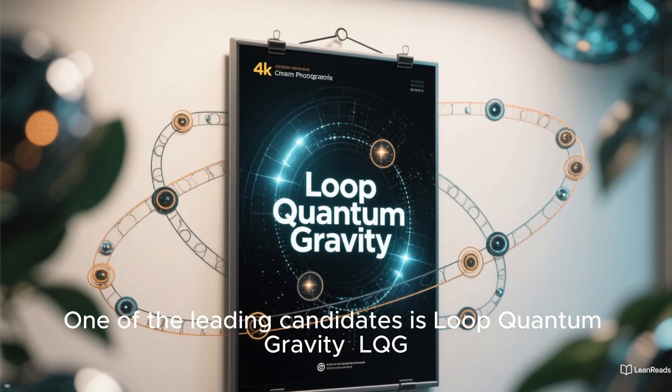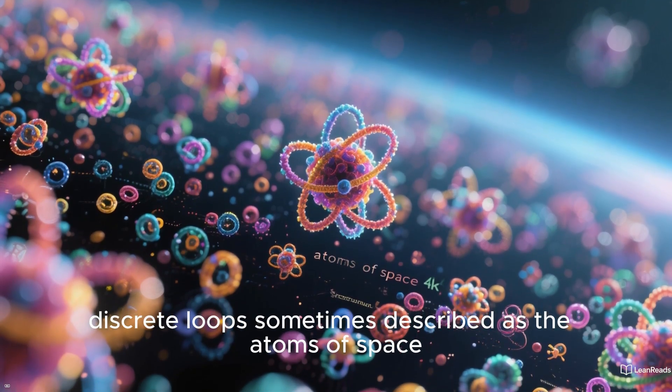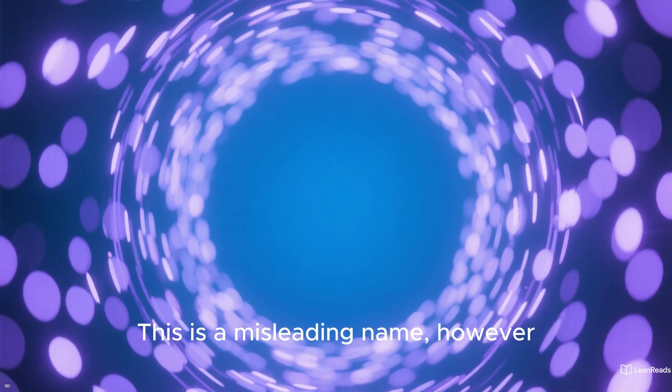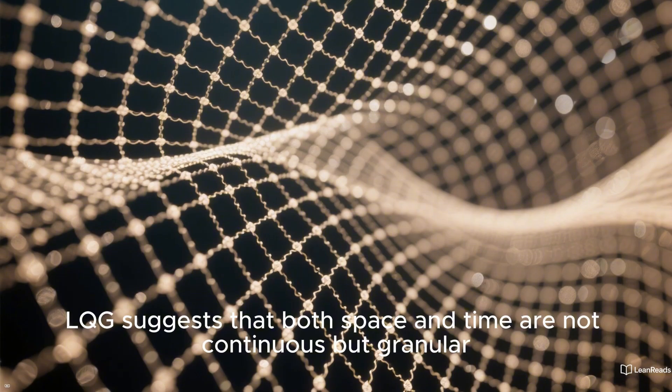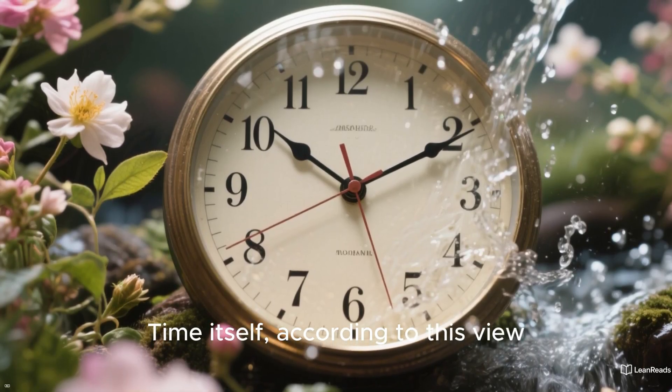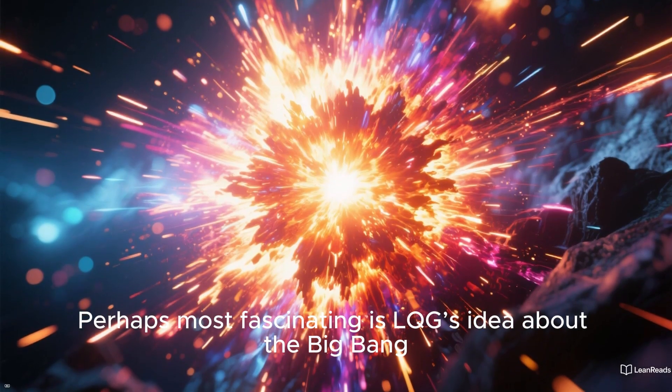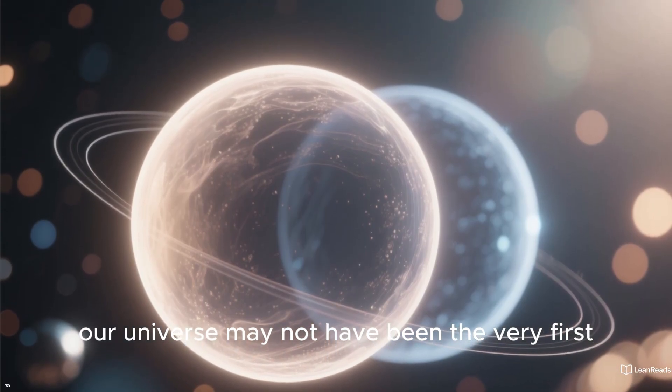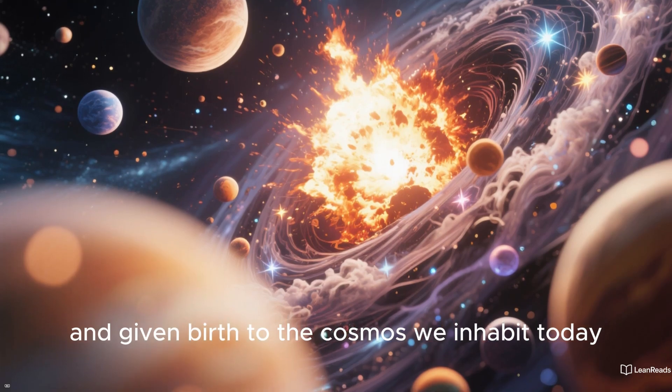One of the leading candidates is loop quantum gravity, LQG. LQG proposes that space itself is made of tiny, discrete loops, sometimes described as the atoms of space. This is a misleading name, however, because these loops are not found in space. Rather, they are space. In this way, LQG suggests that both space and time are not continuous but granular. Time itself, according to this view, has its own rhythm, changing with each natural process. Perhaps most fascinating is LQG's idea about the Big Bang. According to this theory, our universe may not have been the very first. Instead, another universe may have collapsed inward, exploded, and given birth to the cosmos we inhabit today.